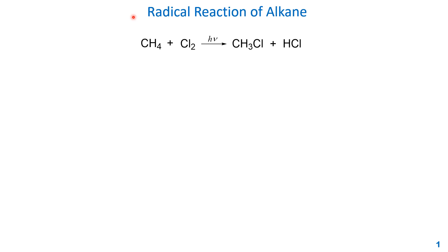Radical reactions always include three major steps: first, initiation; second, propagation; third, termination. Let's look at initiation first. Initiation means it will produce the first radicals — several radicals that can initiate the main reaction, propagation.